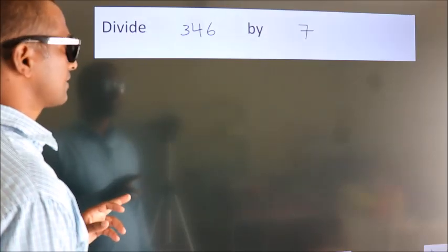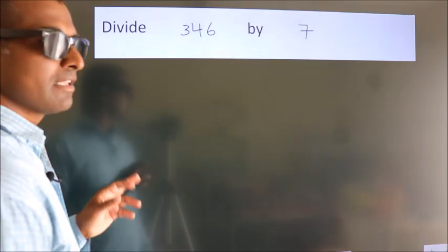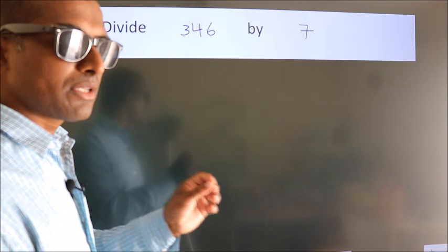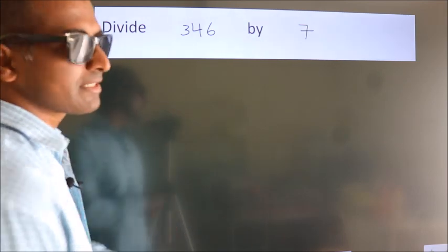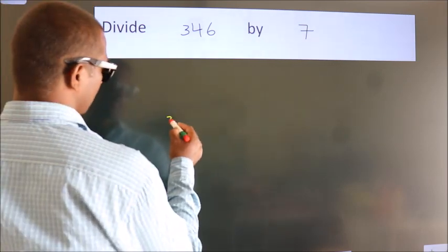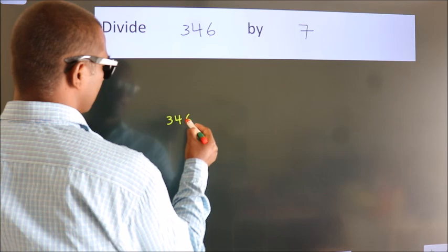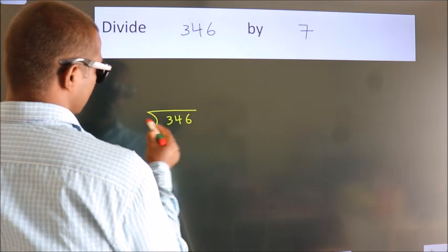Divide 346 by 7. To do this division, we should frame it in this way. 346 here, 7 here.